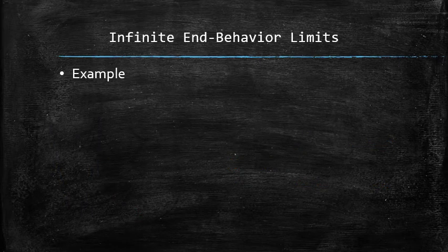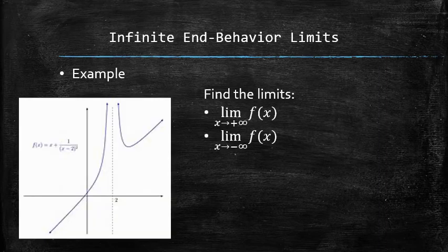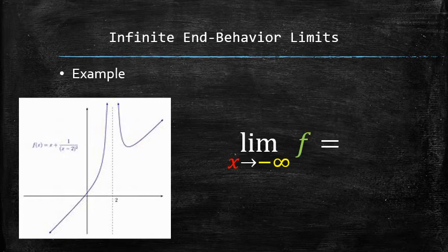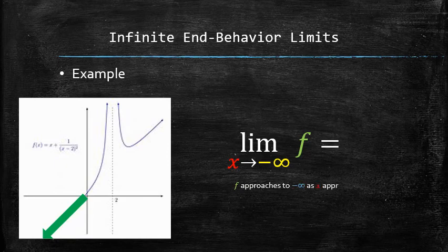Let's do another example. Consider a function defined by the following graph and let's find the following limits — in other words, let's describe the non-asymptotic end behavior of the graph. To find the non-asymptotic end-behavior limit on the left, we need to determine whether the graph increases or decreases indefinitely as x approaches negative infinity. It is easy to see that the function goes down — f approaches negative infinity as x approaches negative infinity. Therefore, the answer is negative infinity.